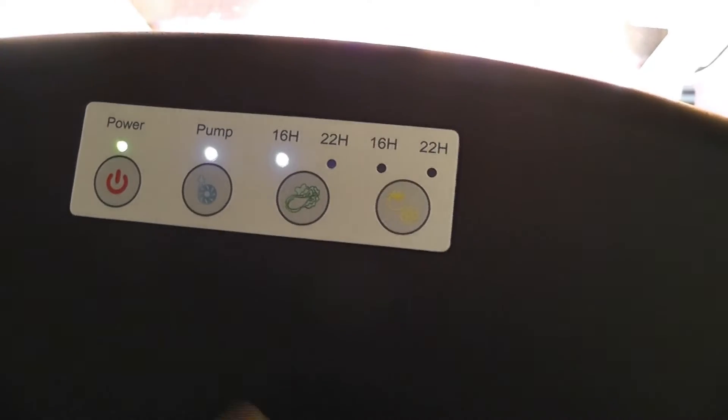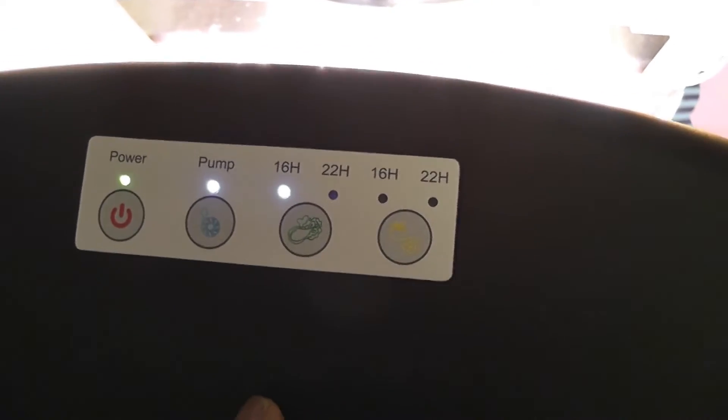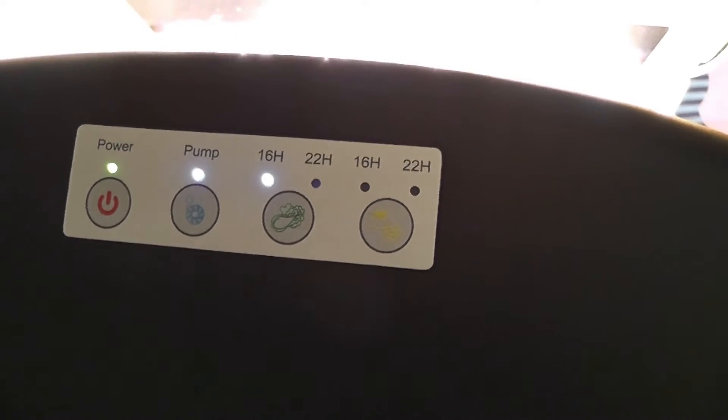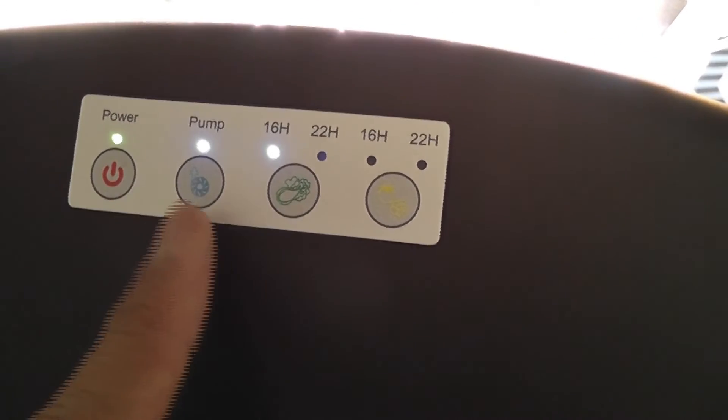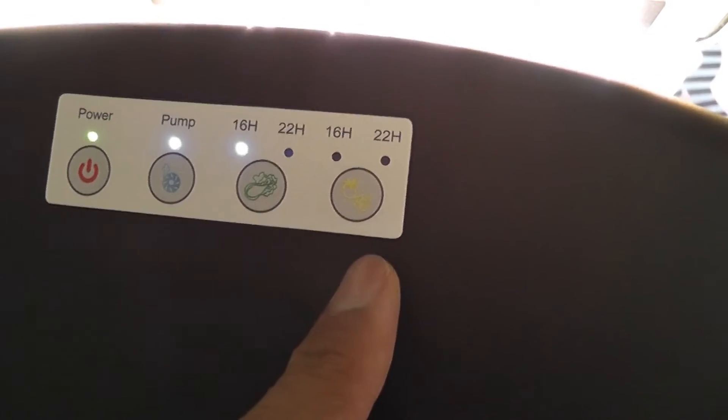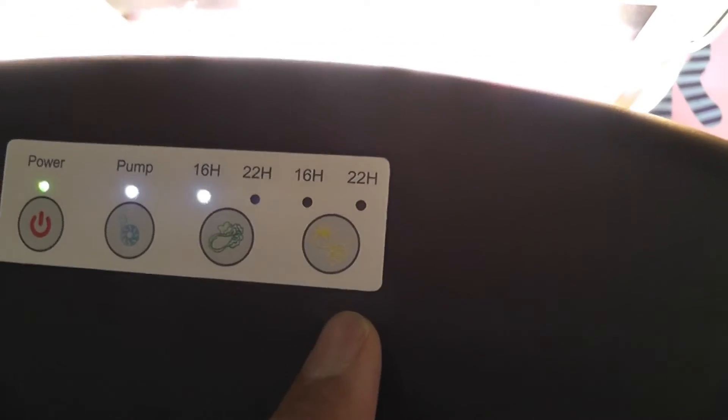Coming to the settings, these settings are pretty similar to other Hope Garden. It comes with four buttons: one is power, one is pump, and two grow modes.